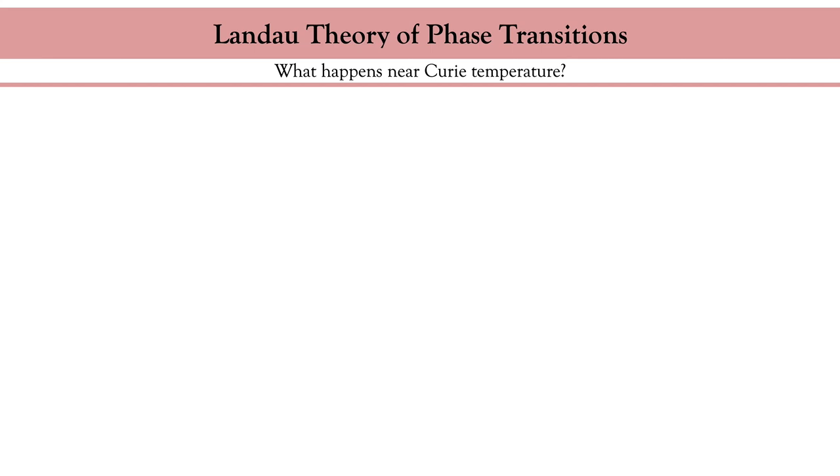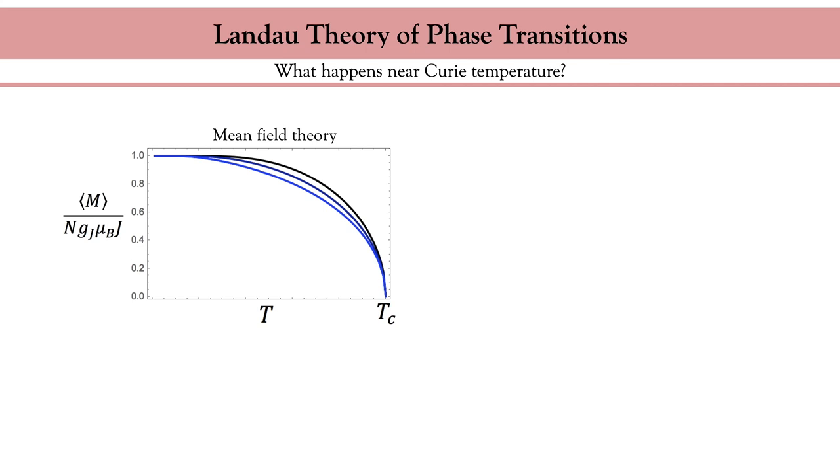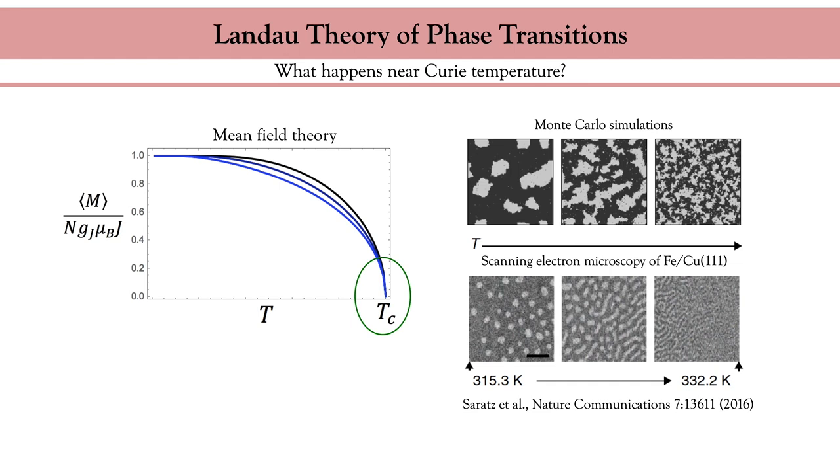In the previous lecture we computed the temperature dependence of the magnetization of a ferromagnet in the mean field theory. We obtained a graph which shows a progressive reduction of the magnetization upon increasing the temperature until it reaches zero at Curie temperature. Now what actually happens close to the Curie temperature? We can get some concrete idea by looking at the pictures on the right taken from a recent work from Saracen and co-workers. On the top panels you have Monte Carlo simulations of the spatial distribution of the magnetization of a ferromagnet as a function of temperature.